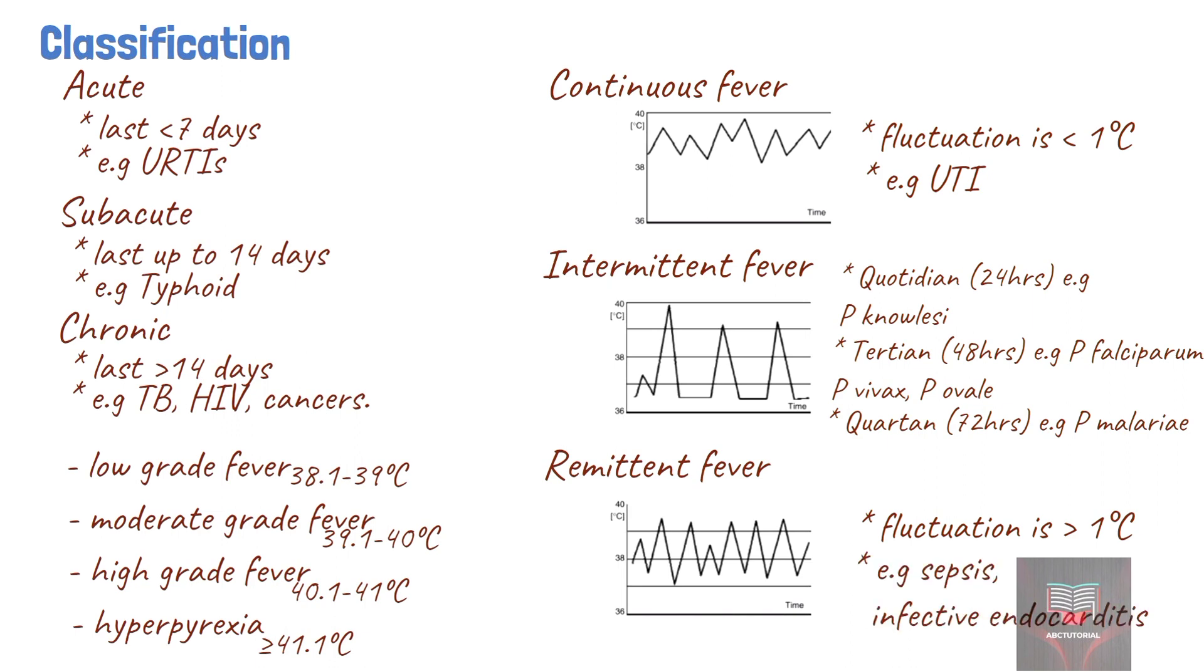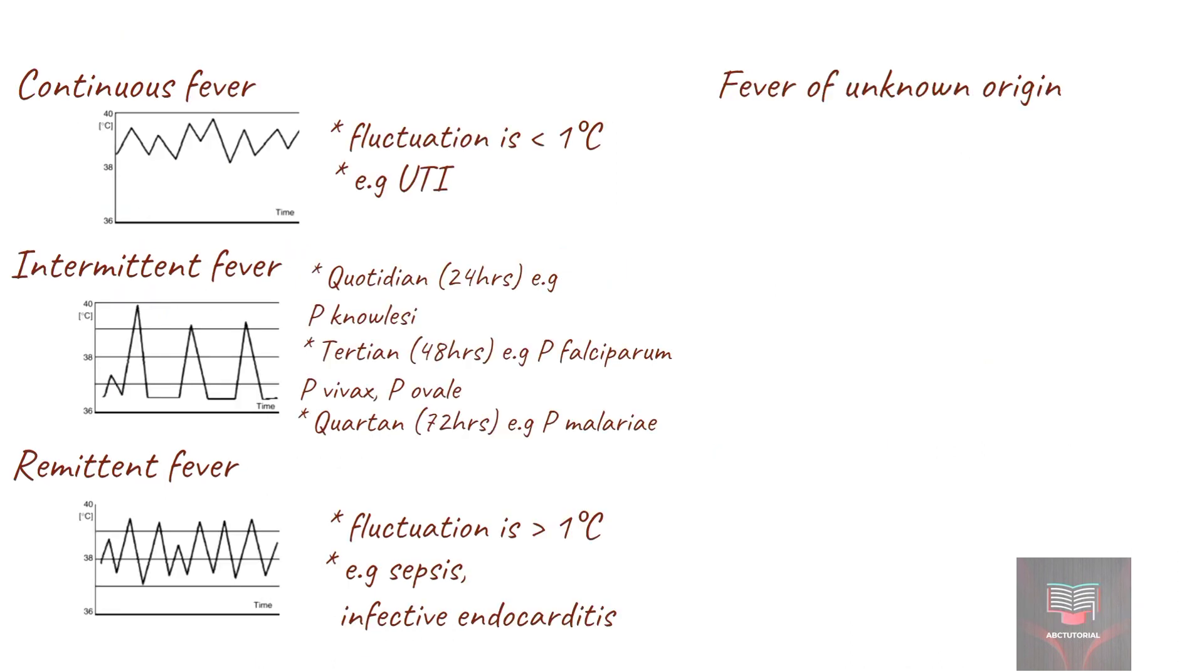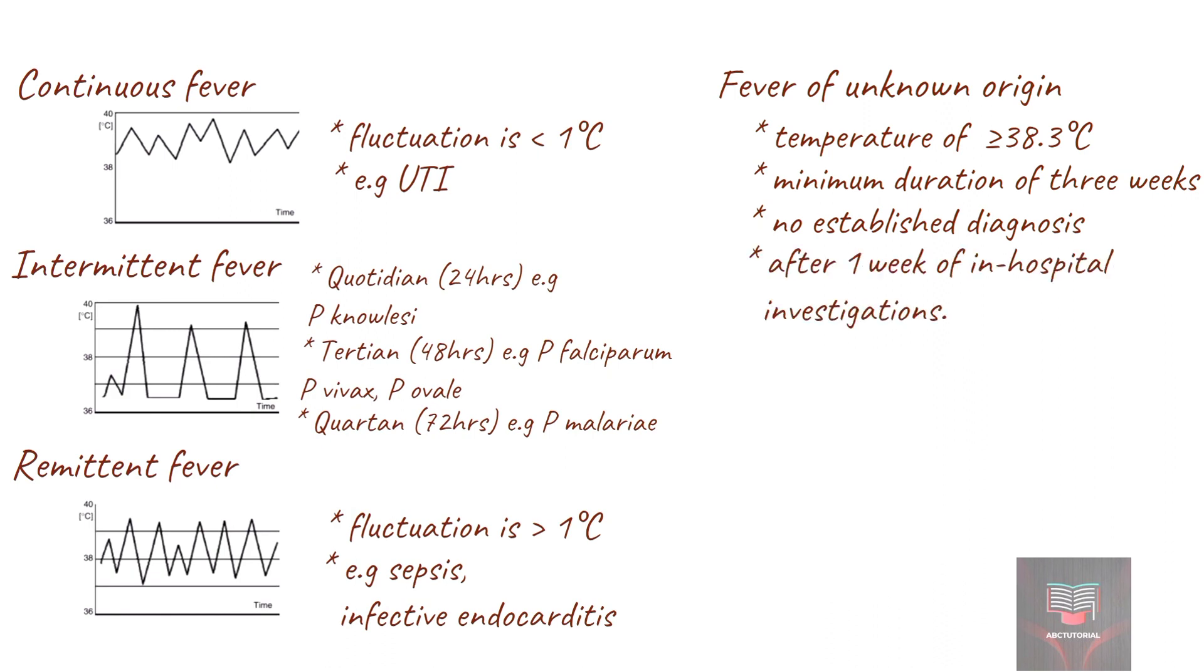Persistent fever that cannot be explained after repeated routine clinical evaluation is called fever of unknown origin. Fever of unknown origin was defined as a temperature of 38.3 degrees Celsius or higher with a minimum duration of three weeks without an established diagnosis after an intensive one-week investigation in the hospital. A neutropenic fever, also called febrile neutropenia, is fever in the absence of normal immune system function. Because of the lack of neutrophils, bacterial infection can spread rapidly and this fever usually requires urgent medical attention. This kind of fever is commonly seen in people receiving immunosuppressing chemotherapy.